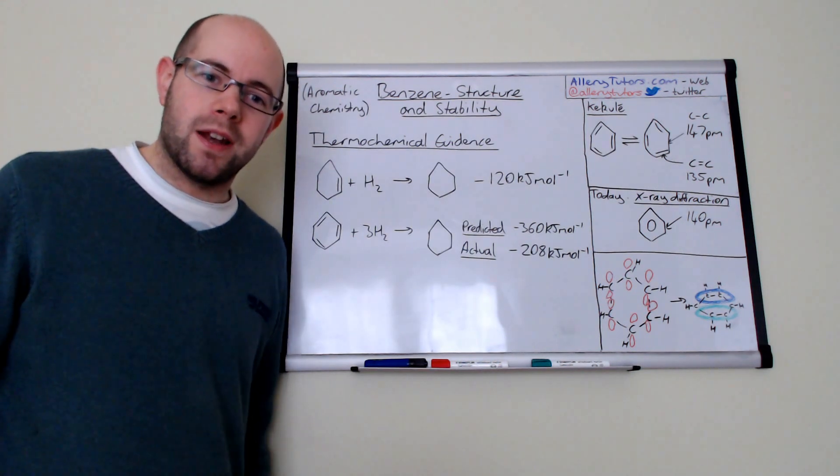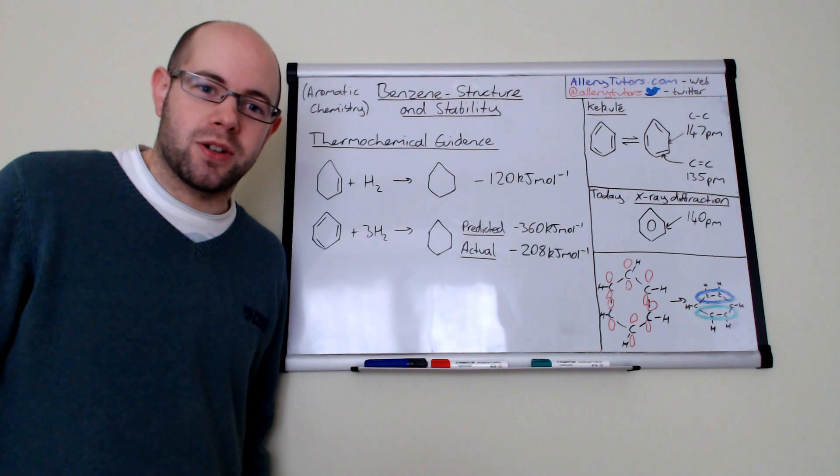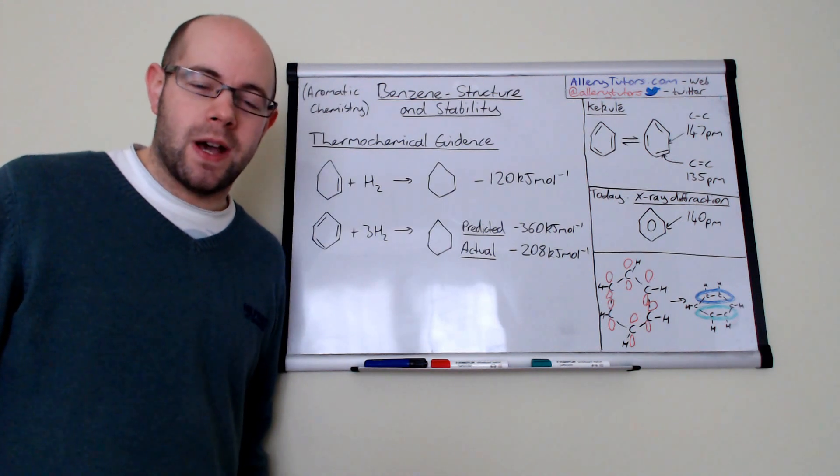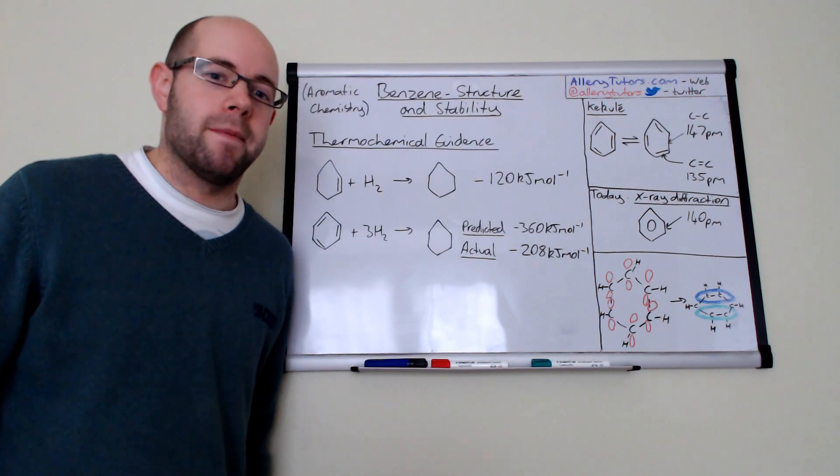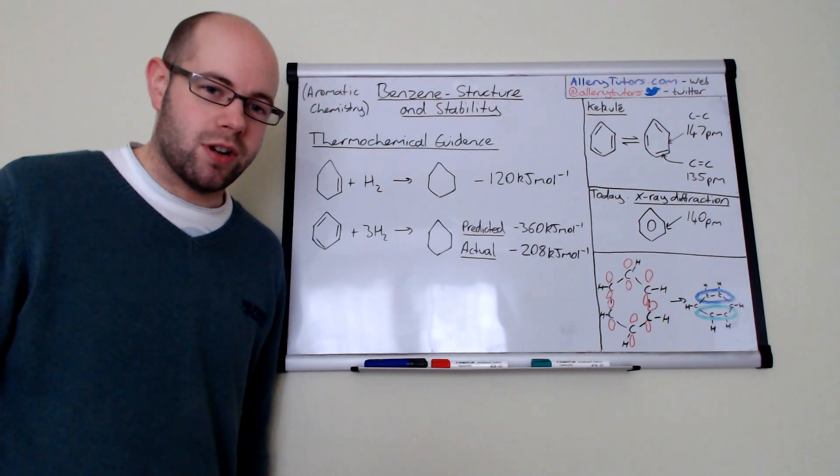It all started when a scientist called Michael Faraday first discovered benzene and he suggested that his formula was C6H6. However, he didn't know how it was actually structured.